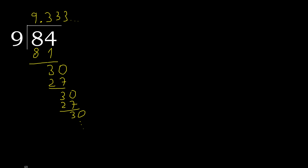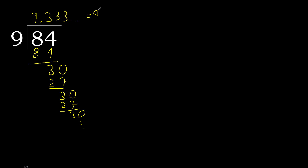84 divided by 9 is 9 point 3 repeating — 9.3̄. The digit 3 after the decimal point repeats indefinitely.